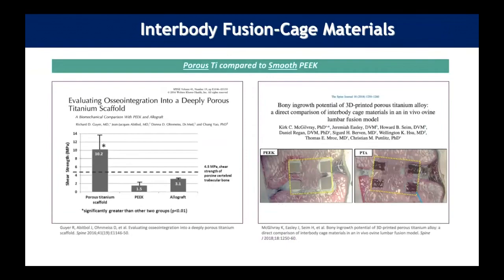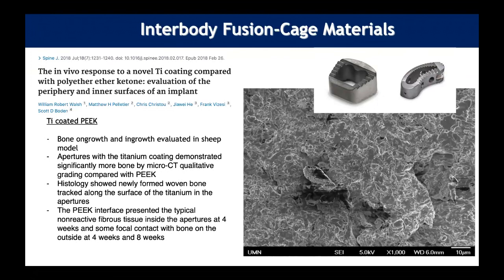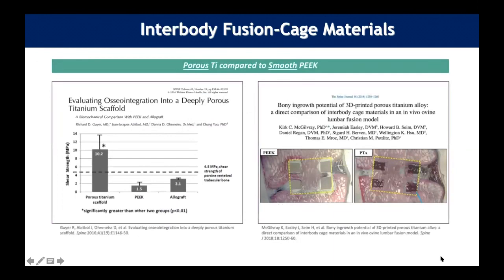Porous PEEK is also available to improve the bone-implant interface. A study comparing a titanium-coated PEEK implant to PEEK alone showed histology with newly formed woven bone tracking along the titanium surface into the aperture of the device, while the PEEK interface presented the typical fibrous tissue layer around the implant.